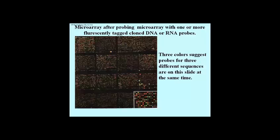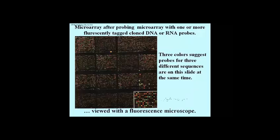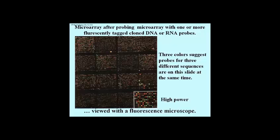Each little colored dot represents the position of one spot of DNA on one of these microscope slides. In this picture alone, there are perhaps two or three thousand spots, and that's just a small region of the slide. The microarray has been probed with cloned DNA or RNA samples made fluorescent by chemically tagging them with a fluorescent dye. You can see at least three colors of fluorescence, suggesting this microarray was probed with three different sequences at the same time. On the lower right is part of one box shown at high power, more clearly showing the reddish, greenish, and yellowish fluorescent spots, visualized with a standard fluorescence microscope.